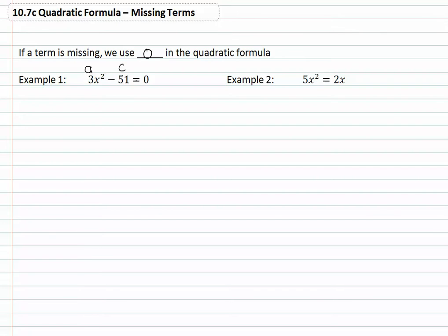So when we plug this into our formula, which if you recall is negative b plus or minus the square root of b squared minus 4ac all over 2 times a.